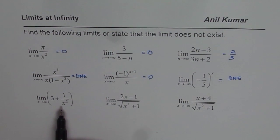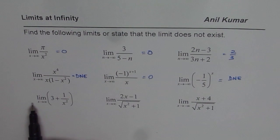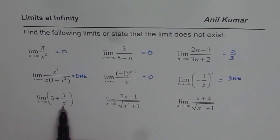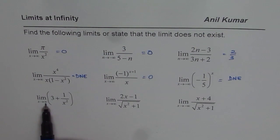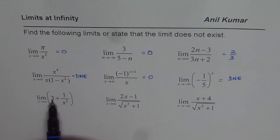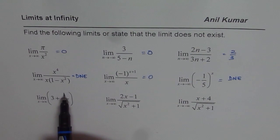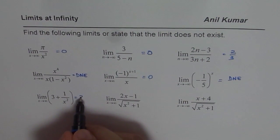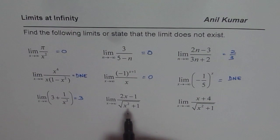Now in this case we have the limit as x approaches infinity for 3 plus 1 over x squared. The limit of the constant will be the constant, so it is 3. For 1 over x squared, it is going to be 0. So when you add them up, you get 3 as your answer.